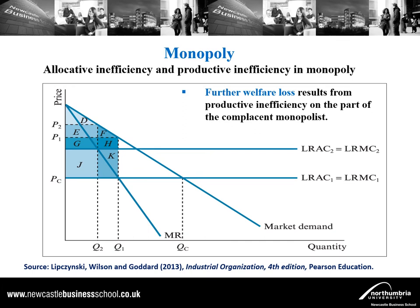With economic and technical inefficiency, average costs increase, represented by an upward shift in the long-run average cost curve. The result is a further reduction in output — initially we were producing at one quantity, but now introducing inefficiency causes a further shrinkage. This creates an additional deadweight loss corresponding to a new area on the diagram. There is also a shrinkage in producer surplus and a decline in consumer surplus, now represented by a smaller area.